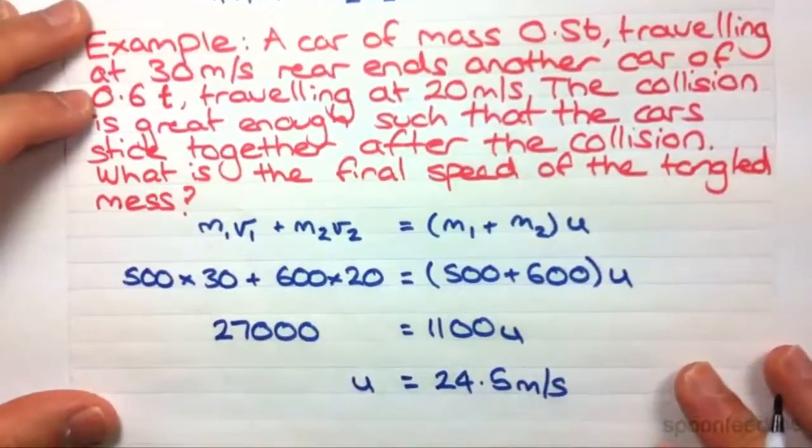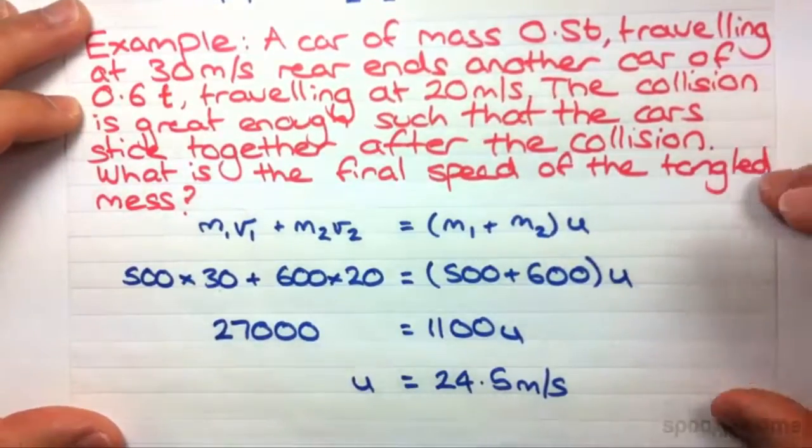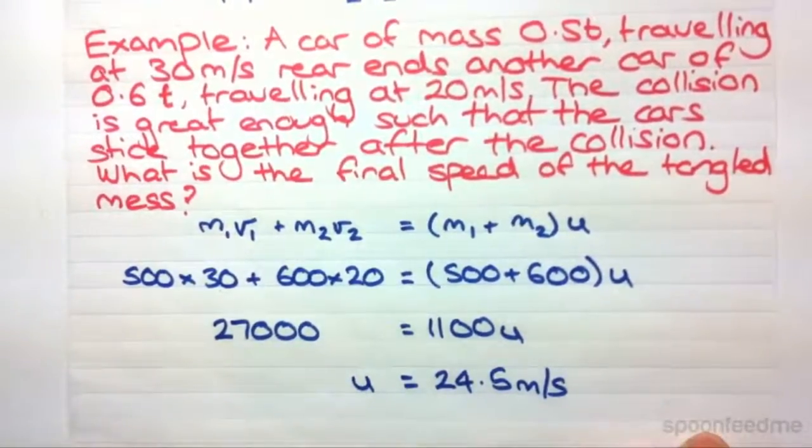So the collision slowed down that first car but it made the second car speed up. So that's inelastic collisions and we'll look at elastic in the next video. Thanks guys.